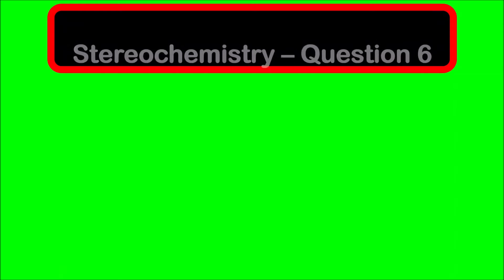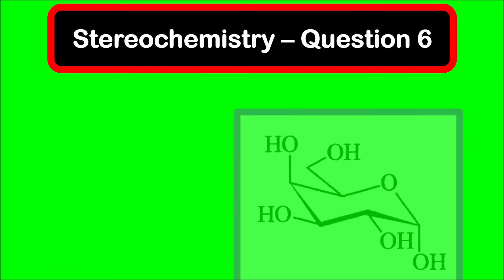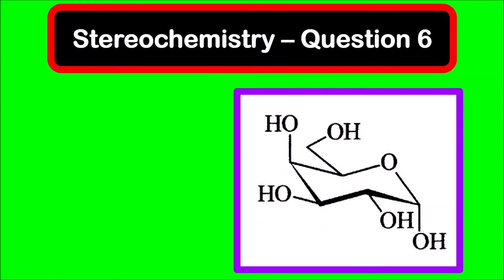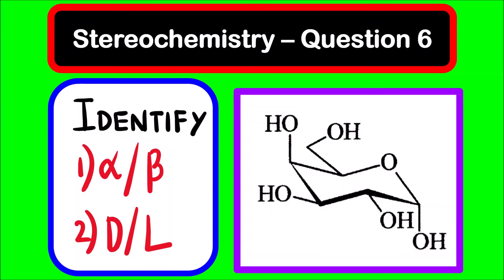Hello everyone. Welcome to Chemazon Complete Chemistry. In today's video we are going to see question 6 of the stereochemistry question bank. A monosaccharide sugar is given in the chair conformation and the question is to first identify whether it is an alpha anomer or beta anomer.